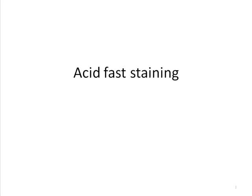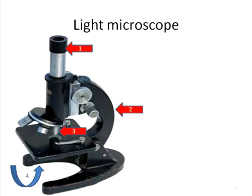This is a video module on acid-fast staining. Acid-fast staining is used to stain bacteria like Mycobacterium tuberculosis. The ability of certain bacteria to resist decolorization even after being treated with acids is called acid fastness. This can be done under the light microscope; it's a simple procedure.